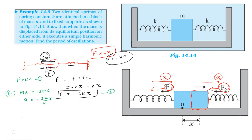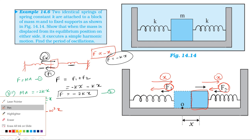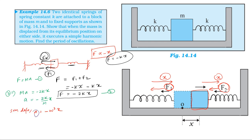From the simple harmonic motion definition, acceleration equals minus omega squared times x. If we compare equations 3 and 4, comparing acceleration and displacement, omega squared equals 2k divided by m.